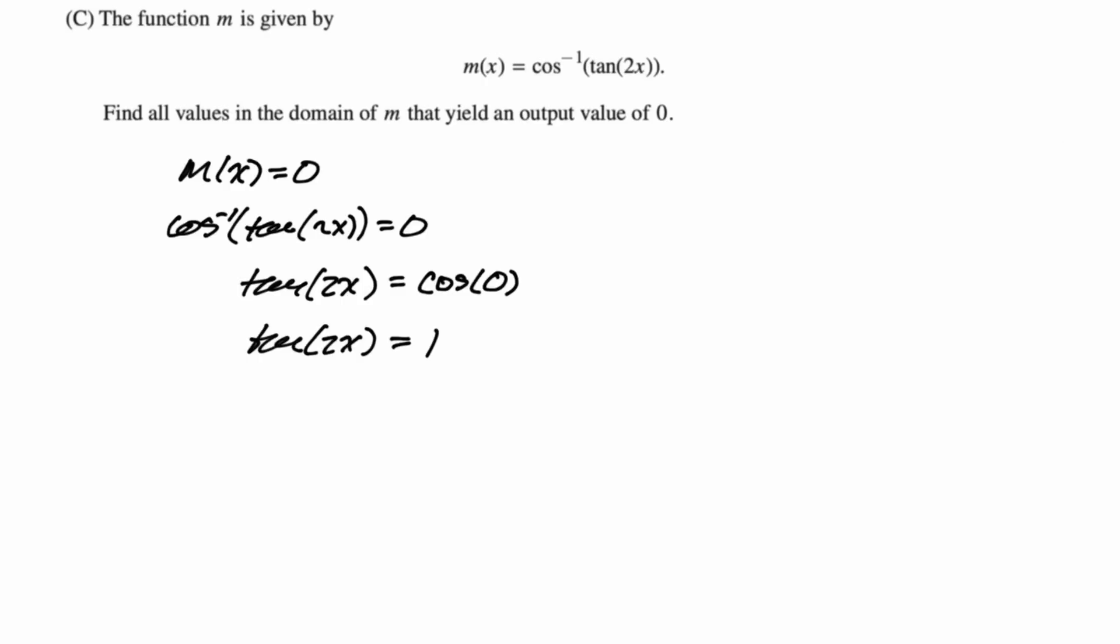So we think to ourselves, where is tangent equal to 1? Well, tangent is equal to 1 at π/4. You should definitely memorize your unit circle. Sines, cosines, and tangents. They help out immensely.